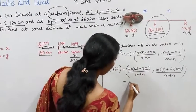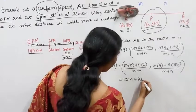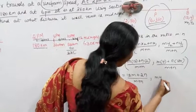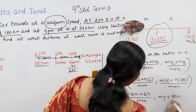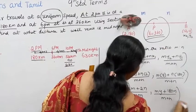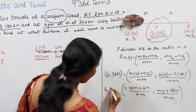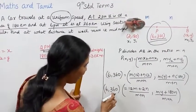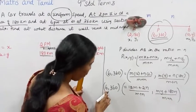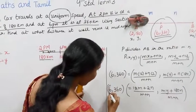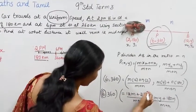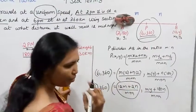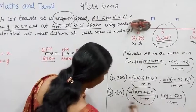This is the answer. 6,360. Taking the first coordinate: 6 equals (12m + 2n)/(m+n).